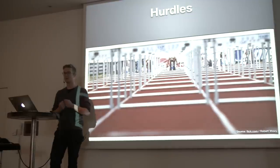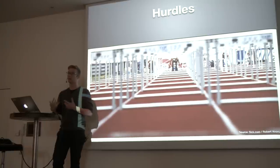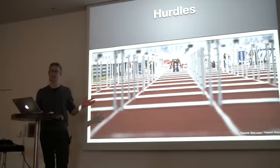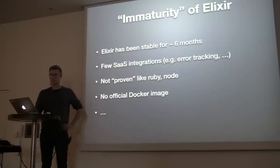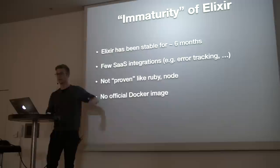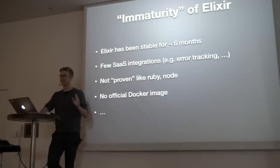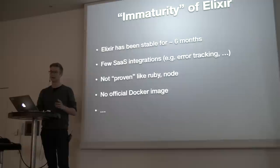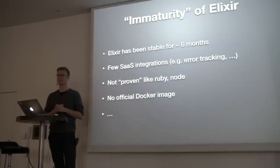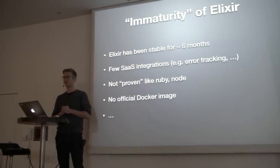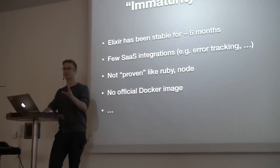The first big hurdle is the maturity of Elixir. It's a little bit unfair, but you have to keep in mind that Bleacher Report is a big corporation. A language that hasn't been stable for more than six months is not necessarily something that makes everybody comfortable. When I started that project, Elixir was at 0.8, and they were like, that's very young to put a lot of our money and trust into.